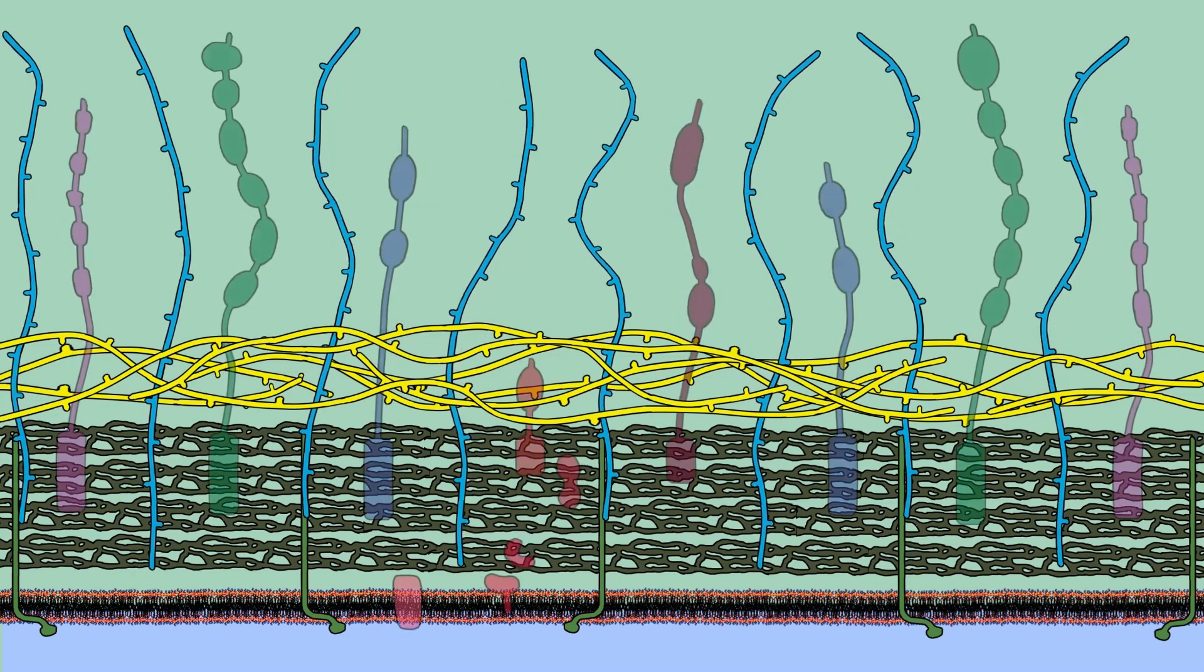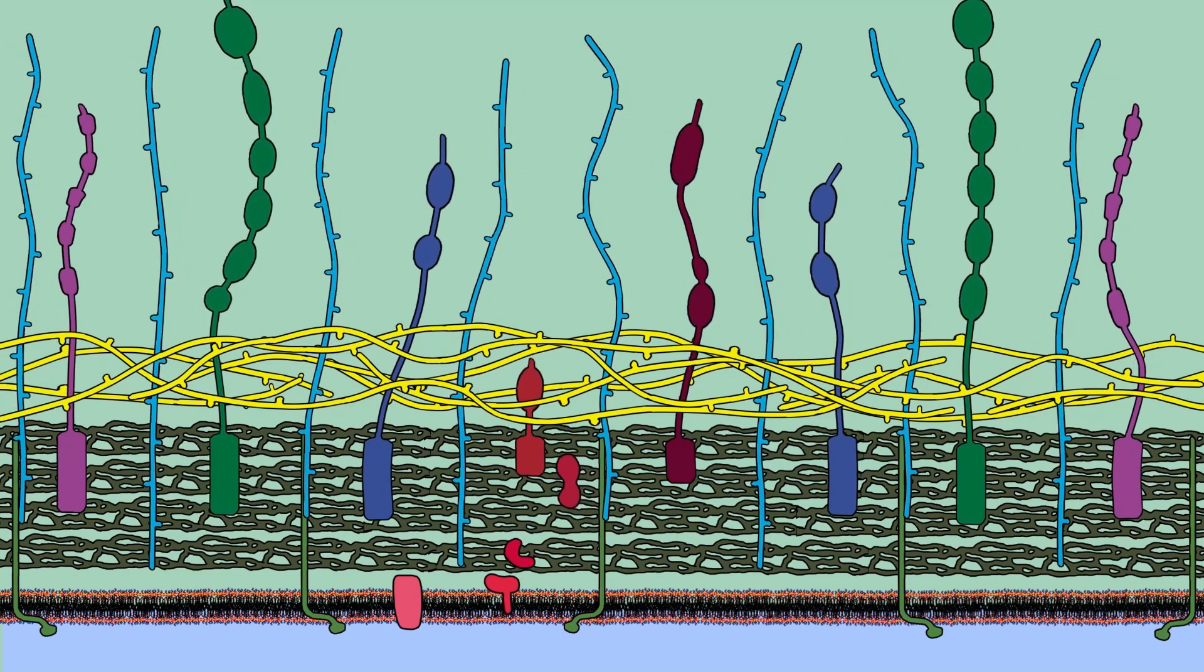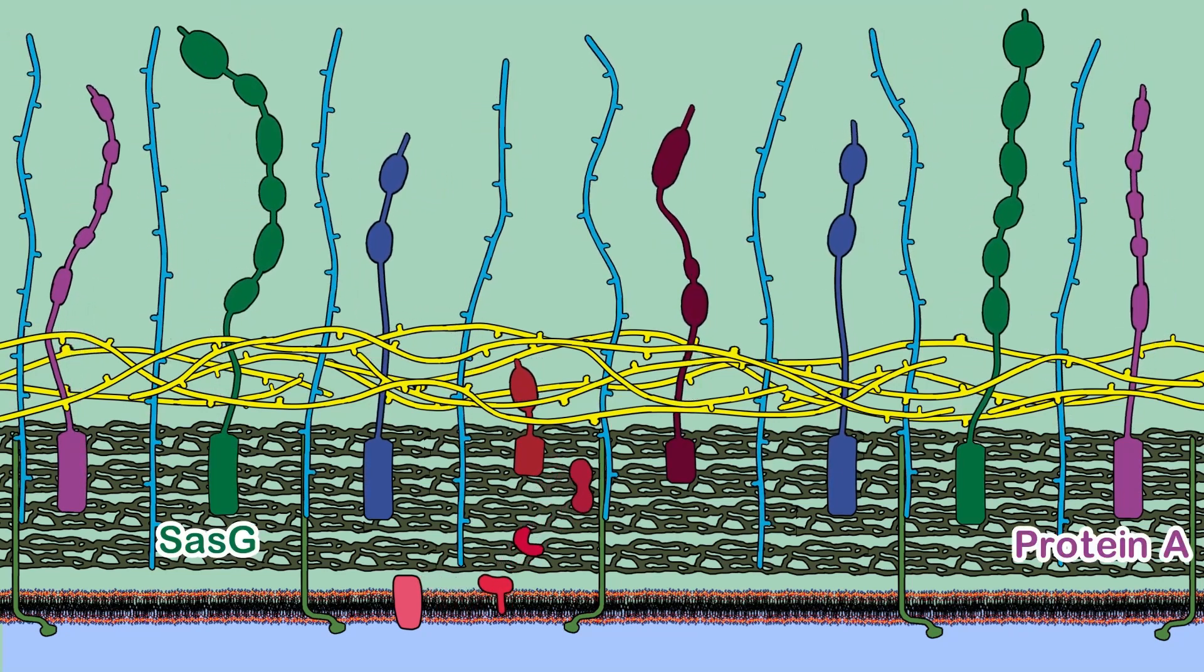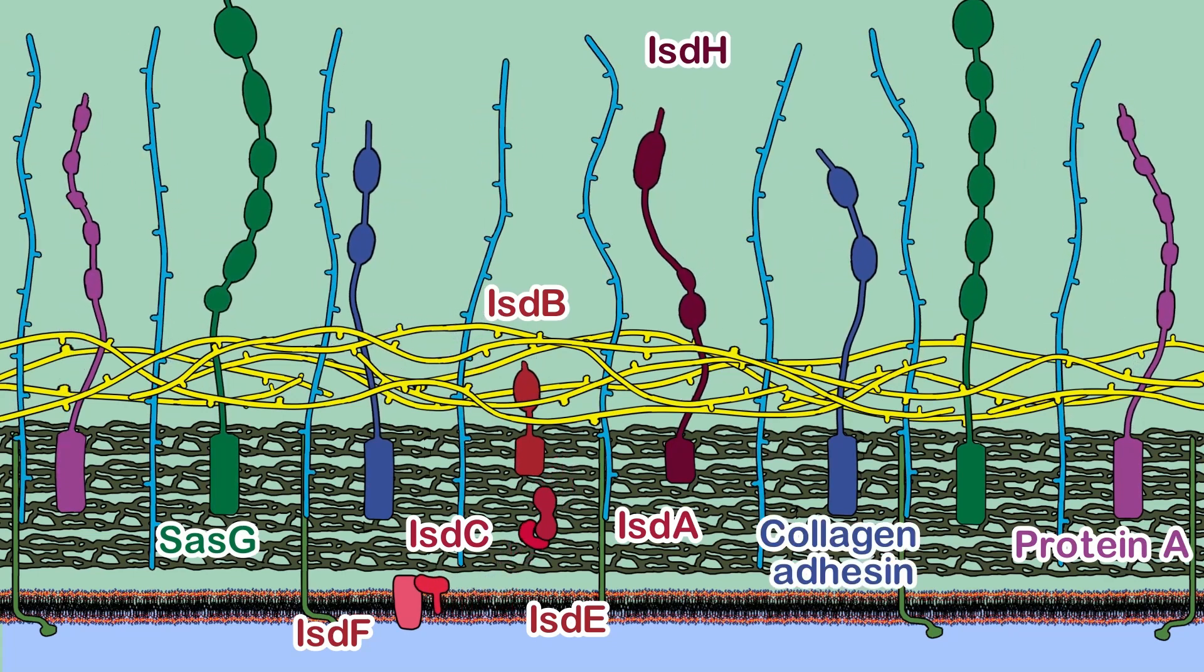Staphylococcus aureus possesses several proteins anchored to the peptidoglycan layer. Some of these cell wall-anchored proteins are used to stick to neighboring cells, others to evade the immune system, others to steal nutrients from the body, and others to stick to surfaces.